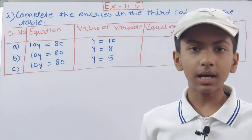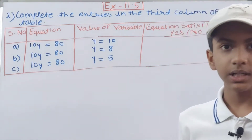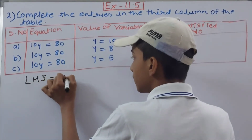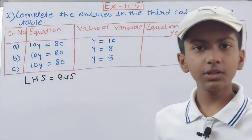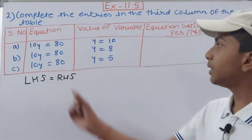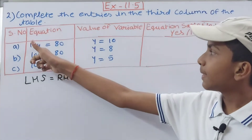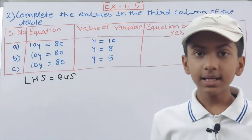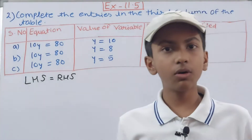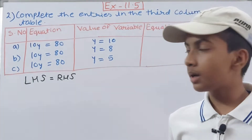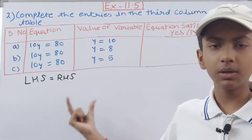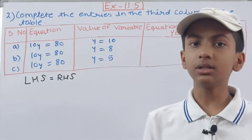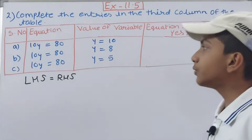What does 'equation satisfied' mean? In an equation, LHS and RHS are equal. When you solve the equation, both sides are equal. Here, we have to solve the LHS and then see if it equals the RHS. If the left hand side equals the right hand side, the equation is satisfied; if they are unequal, the equation is not satisfied.